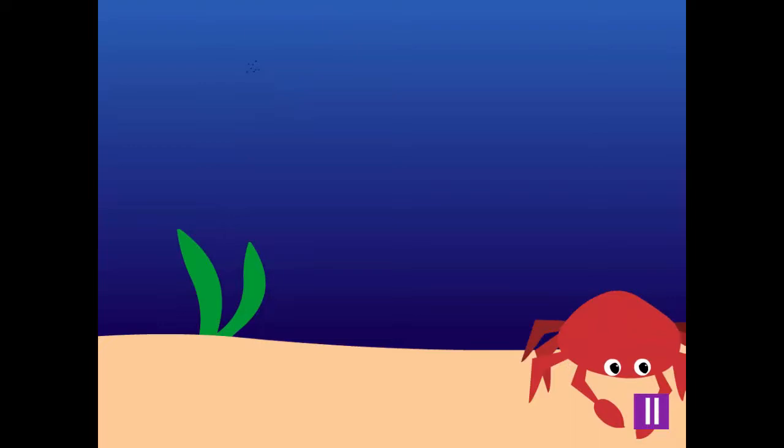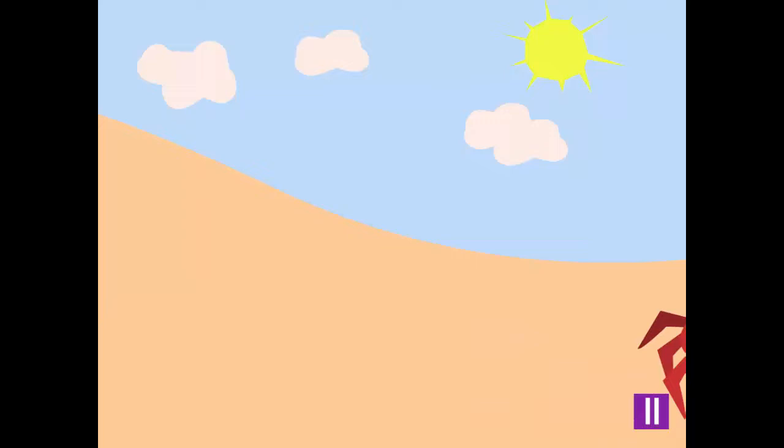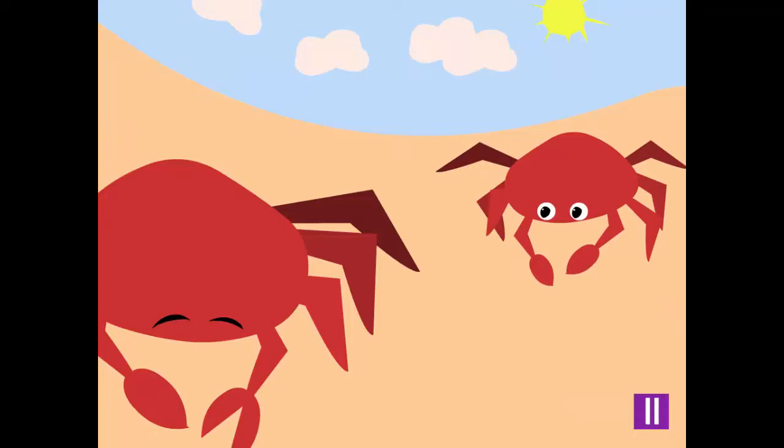Crabs are animals that live in the ocean, but also sometimes on land. You may sometimes see one in the sand on the beach. A crab has a hard shell all around its body and many legs and claws.